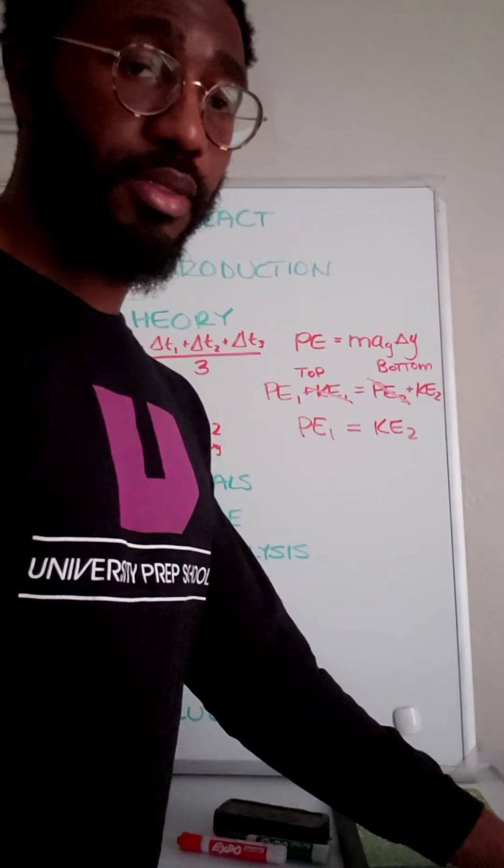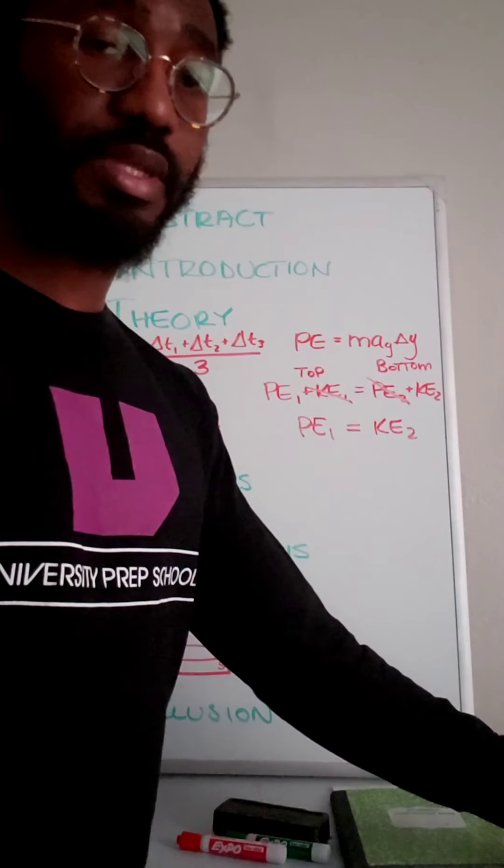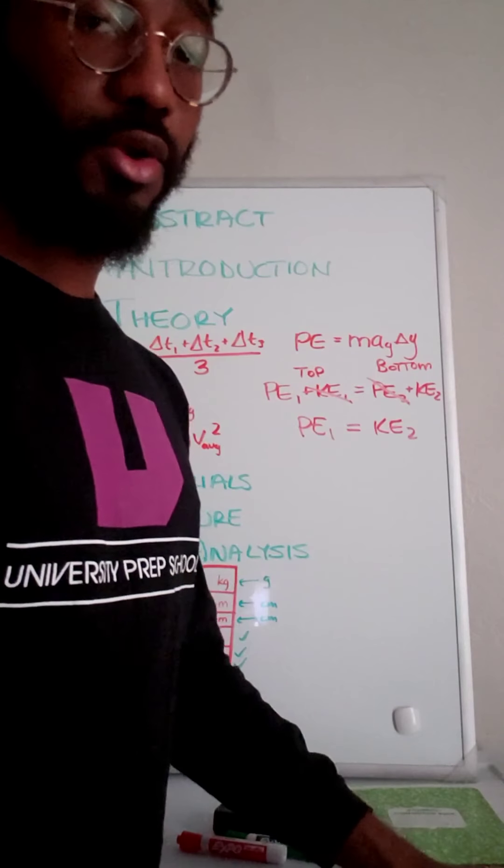So if you tell me energy was conserved, then you also need to tell me in the conclusion what was the kinetic energy at the bottom of the ramp and what was the potential energy at the top of the ramp. I need to know in order for you to tell me that energy was conserved.